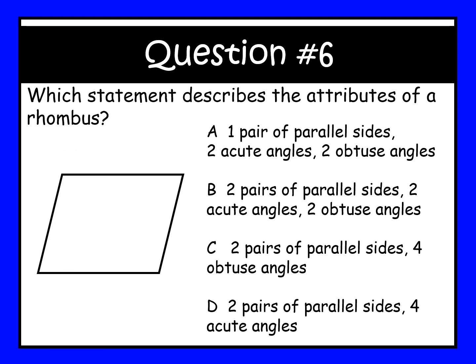Question number six. Which statement describes the attributes of a rhombus? A: one pair of parallel sides, two acute angles, two obtuse angles. B: two pairs of parallel sides, two acute angles, two obtuse angles. C: two pairs of parallel sides, four obtuse angles. D: two pairs of parallel sides, four acute angles. You have about 20 seconds to answer this question.